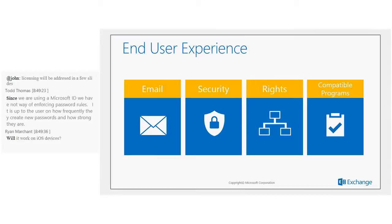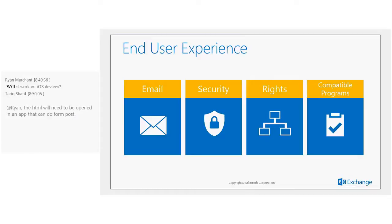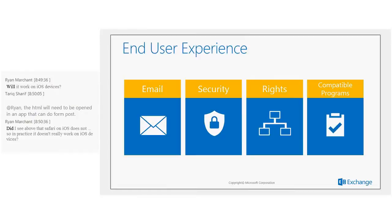Regarding the end user experience: the UI is modern and Office 365-based, easier to navigate with more real estate. For security, RMS is used under the belt to encrypt messages, with AES-256 key strength. Only the intended recipient can see the message, but if they forward or reply, that message is also protected. Compatibility matches Outlook Web App — whatever Outlook Web App supports is extended to Office 365 Message Encryption.